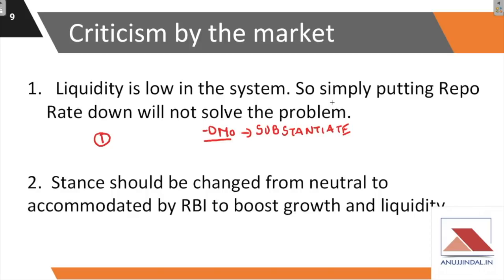The second criticism is that the stance should be changed from neutral to accommodative to boost growth and liquidity. A neutral stance means an equilibrium state where the government watches the market function on its own. Critics argue RBI should have adopted an accommodative stance — actively intervening to boost the economy by increasing money supply in the market — which would be far more favorable than simply observing.